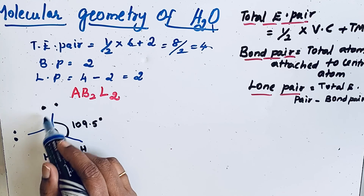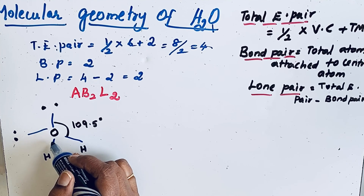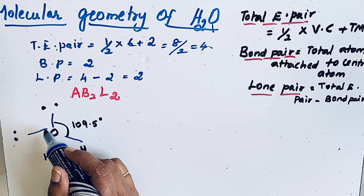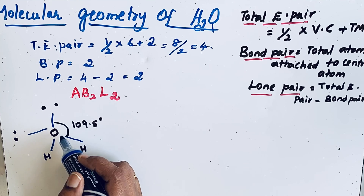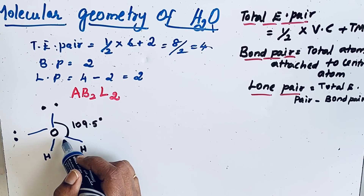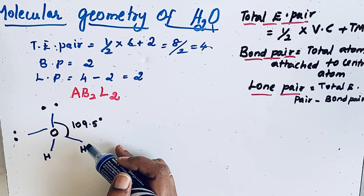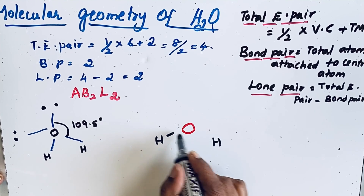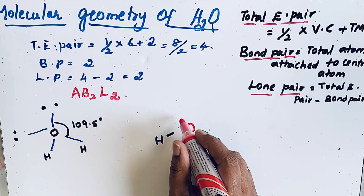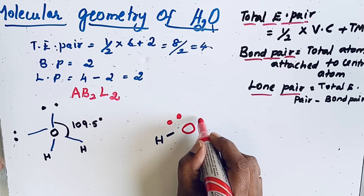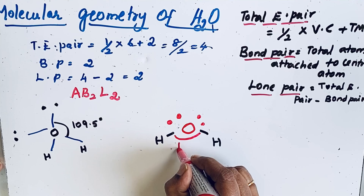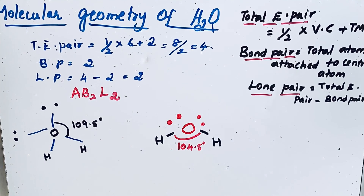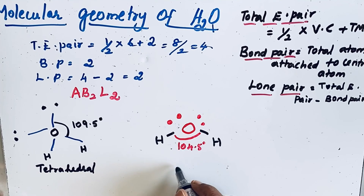However, lone pair–lone pair repulsion is greater than lone pair–bond pair repulsion. If repulsion is greater, it leads to instability. To reduce the repulsion, the bond angle between the two bond pair electrons is reduced from 109.5° to 104.5°, and the water molecule attains a bent shape. The two lone pairs reduce the bond angle to 104.5°, so the expected geometry is tetrahedral but the actual geometry is bent.